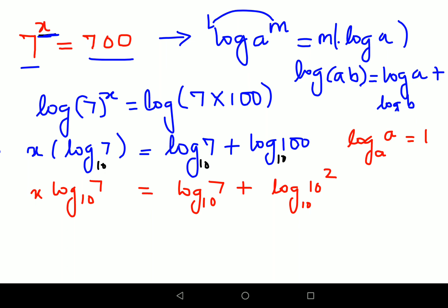We'll use this same logic. The index will come ahead, so we will have x log 7 to the base 10 equals log 7 to the base 10 plus, you'll put the 2 outside, and then you have log 10 to the base 10.